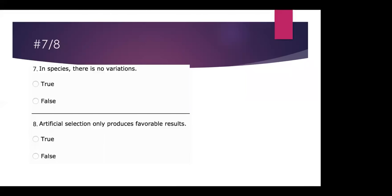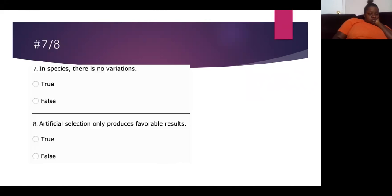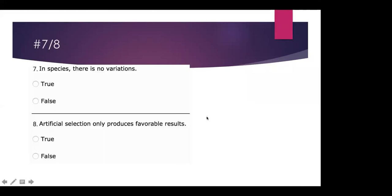Number seven: in species, there is no variation — is that true or false? It's false, because if you think about humans, we don't all look the exact same, and we're all the same species — we're Homo sapiens. So there is lots of variation within species.